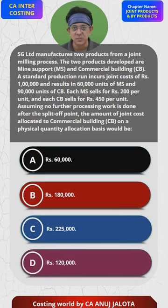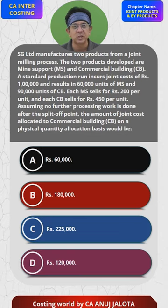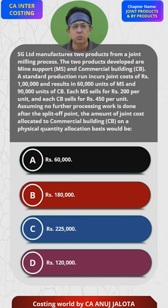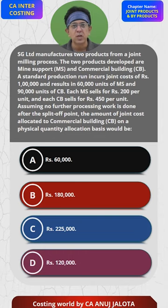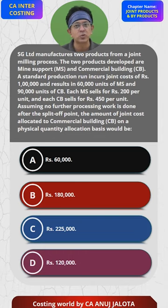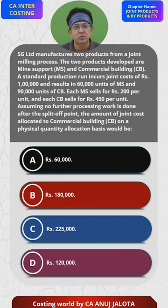Rs 1,00,000 is the joint cost to be divided among the two products in the ratio of physical quantity — that is, the output method. The output was 60,000 for MS and 90,000 for CB, giving a ratio of 2:3. Dividing the joint cost of Rs 1,00,000 in the ratio 2:3, the second product CB gets Rs 60,000 of joint cost. Therefore, the answer is A.